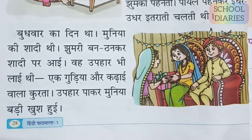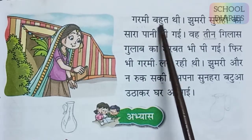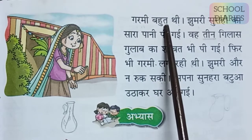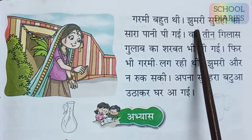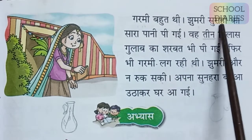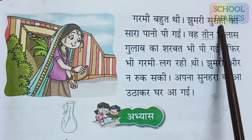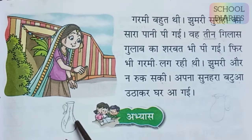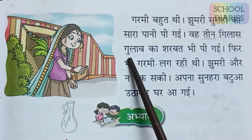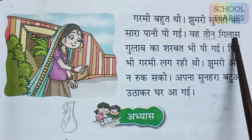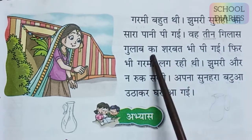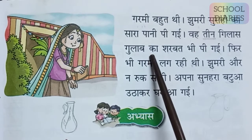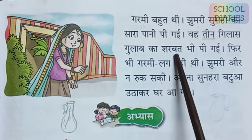Garmi bohat thi — it was a very hot day. Jhumari surahi ka sara pani pei gai — Jhumari drank all the water from the surahi. Surahi is a clay pot with a long neck. Waha teen gilaas gulaab ka sherbat bhi pei gai — she also drank three glasses of gulaab ka sherbat, which is a rose syrup drink. So she drank all the surahi water and three glasses of rose sherbat.